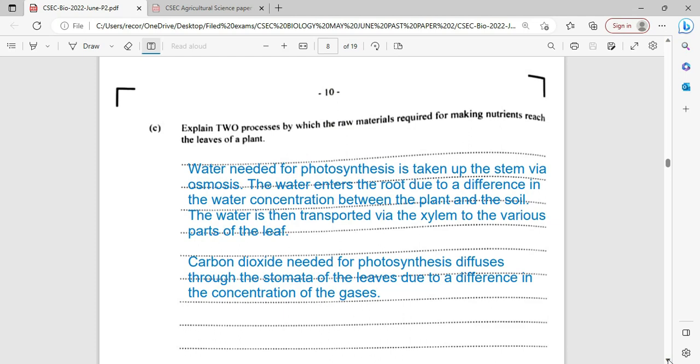There's been two processes by which raw material required for making nutrient-rich leaves of a plant. The water needed for photosynthesis is taken up by the stem via osmosis. The water enters the root due to the difference in the water concentration between the plant and the soil. The water is then of course transported via the xylem to the various parts of the plant or the leaf. Carbon dioxide and their other arm reaches the plant during the process of photosynthesis. It pretty much diffuses through the stomata of the leaf due to a difference in the concentration gradient of the gases on the outside versus leaf.